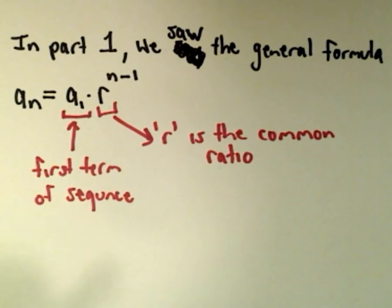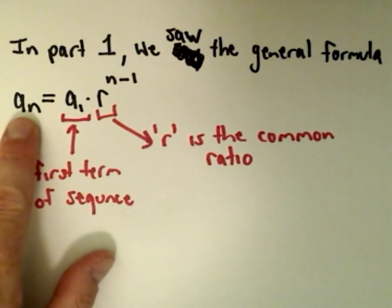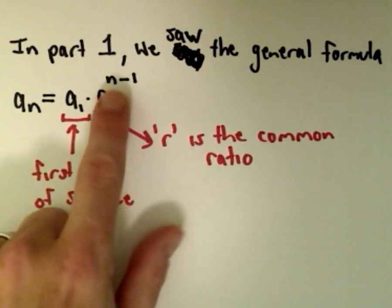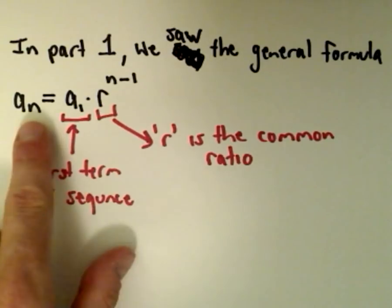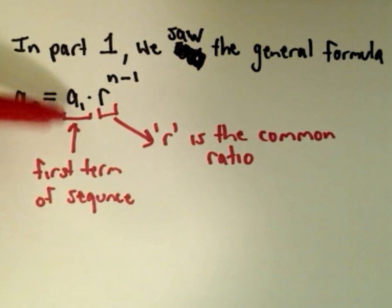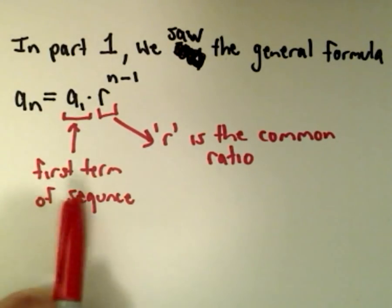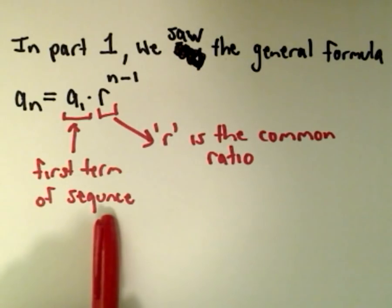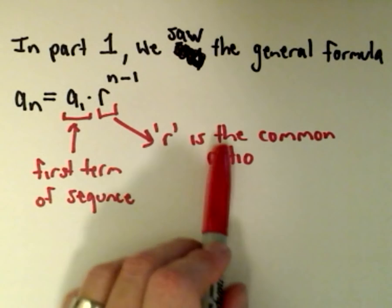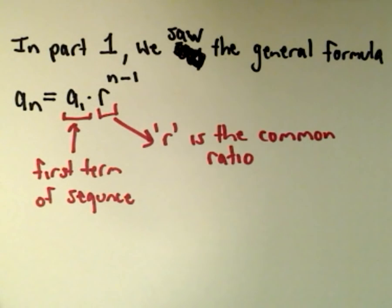From part one, we saw that the general formula for a geometric sequence is a sub n equals a sub 1 multiplied by r raised to the power of n minus 1. Whatever the subscript n is, we use one less as our exponent. a sub 1 is the first term of the sequence, and r, the common ratio, is what you're multiplying by to get to the next term.